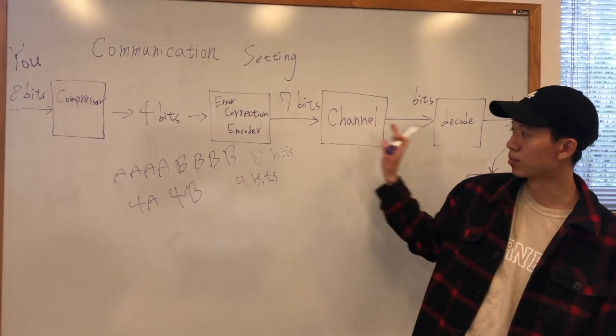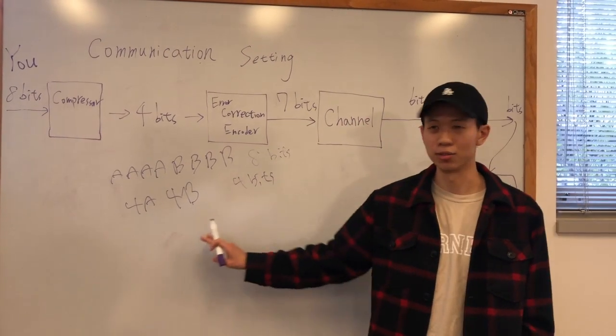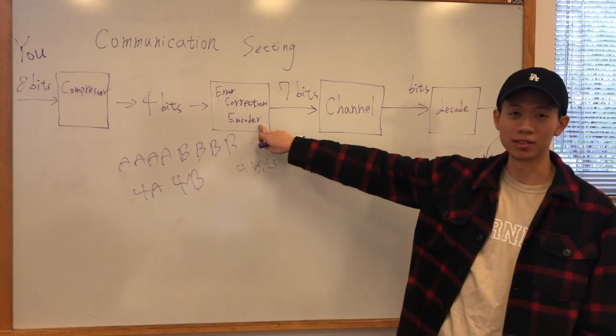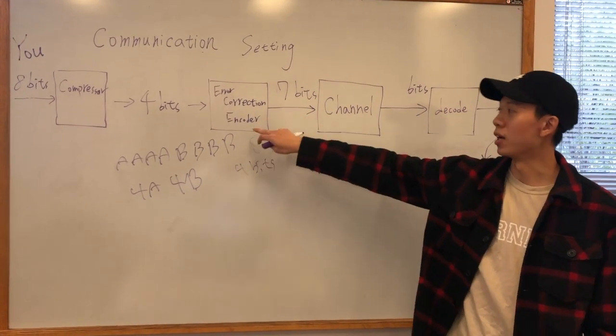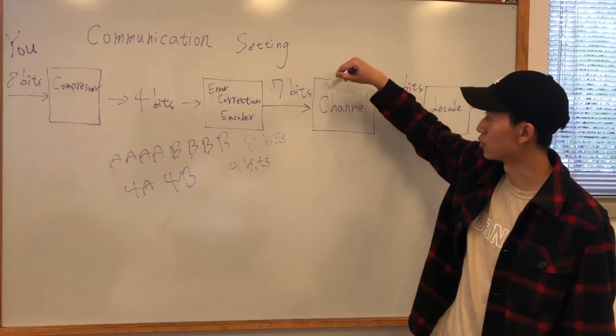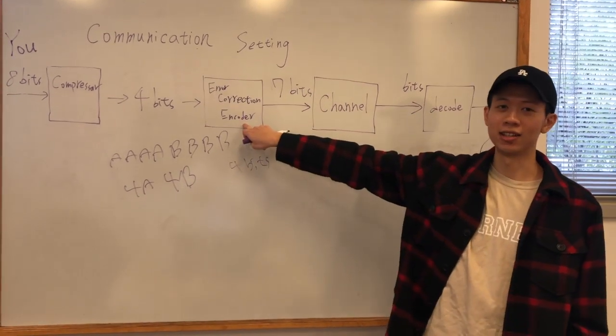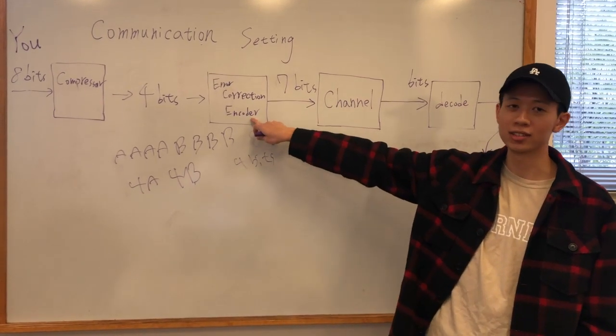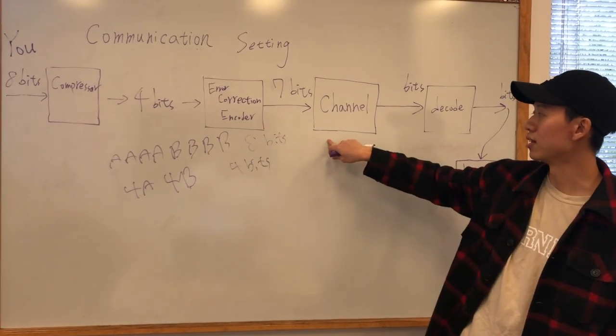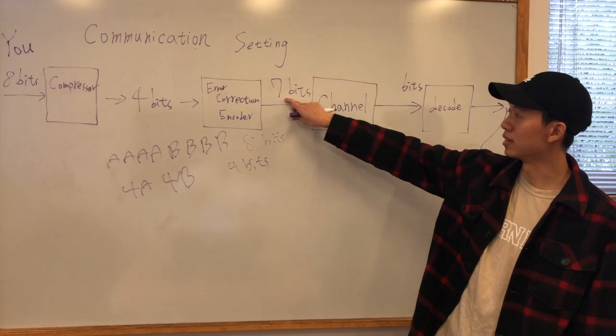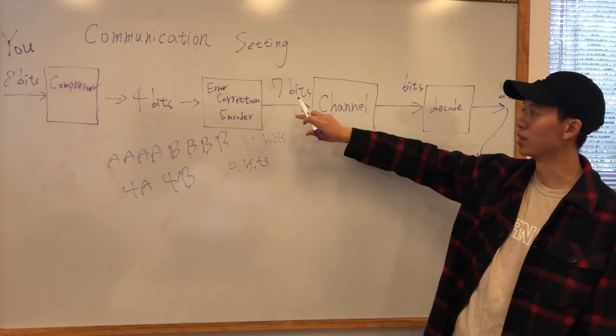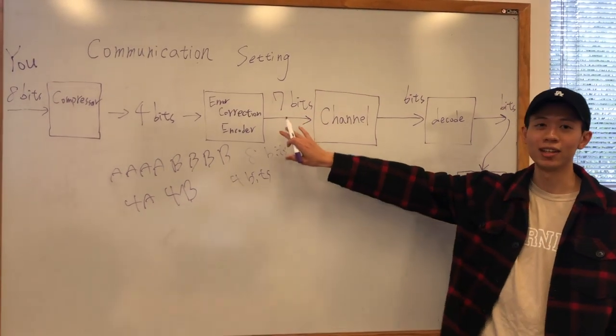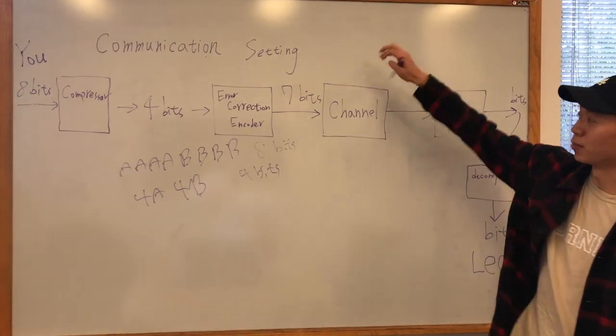After that you will pass your four bits into this block called encoder, and then it will become seven bits to go into the channel. The encoder is just a name, you don't have to know for now. Then we will pass into a channel. You know why this becomes seven bits - it's because of some idea related to error correction, but we will not discuss that for now.